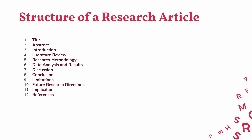What is the structure of a research article? You start with the title, then write your abstract, provide your introduction, literature review, research methodology, data analysis and results, discussion, conclusion, limitations, future research directions, implications, and references. At least these 12 things should be part of a research article, and we will be discussing what should be included in each one of them through the course of this session.